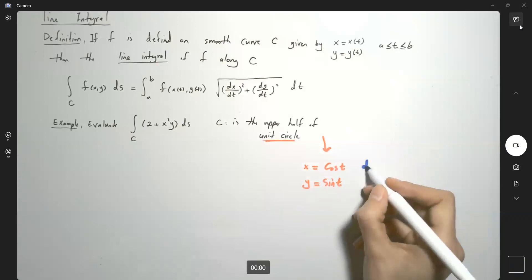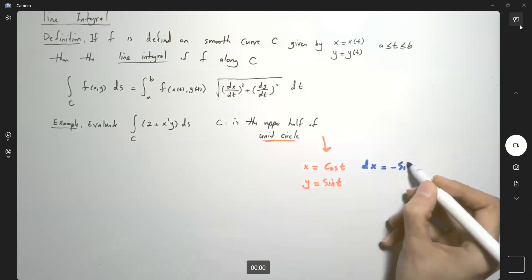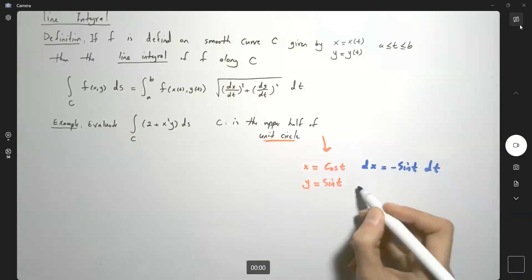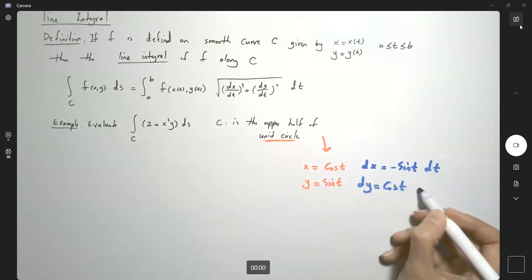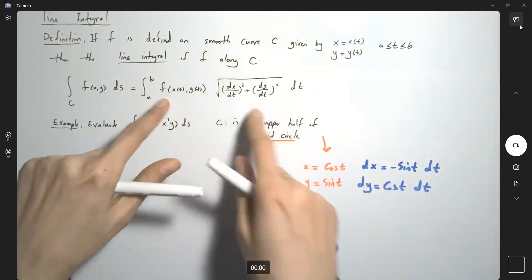Remember that dx is negative sine t dt and dy is cosine t dt. We have all the information we need; we just need to plug them into the integral.